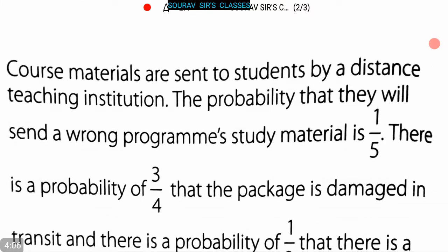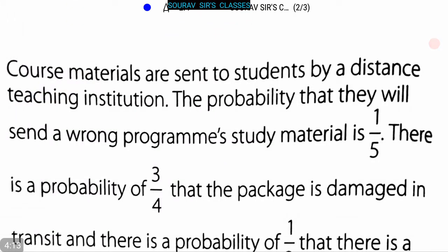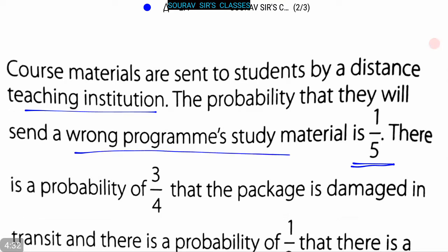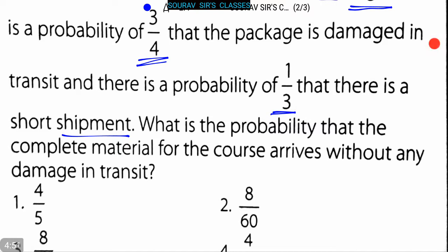Now let's go to our next question. Course materials are sent to students by a distance teaching institution. The probability that they will send a wrong program's study material is 1/5. There is a probability of 3/4 that the package is damaged in transit, and a probability of 1/3 that there is a short shipment. We have to find out what is the probability that the complete material for the course arrives without any damage in transit.